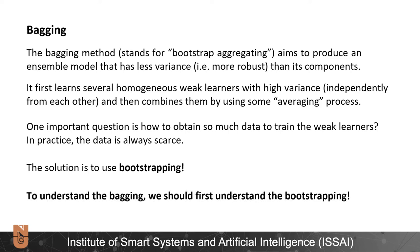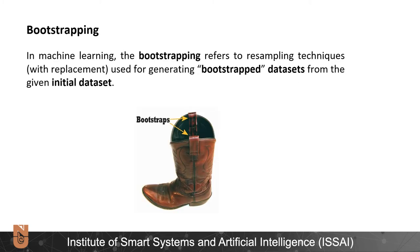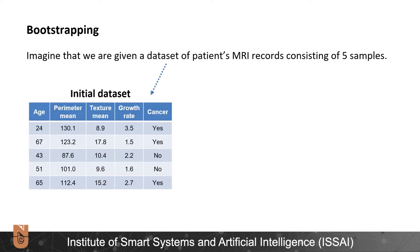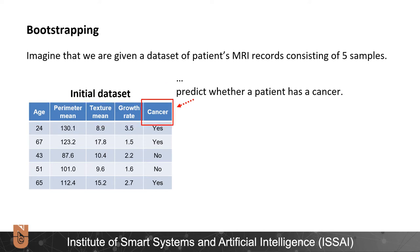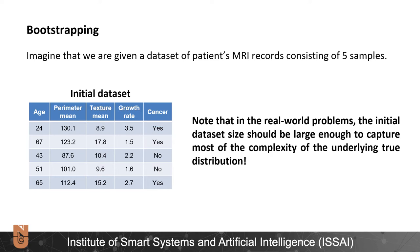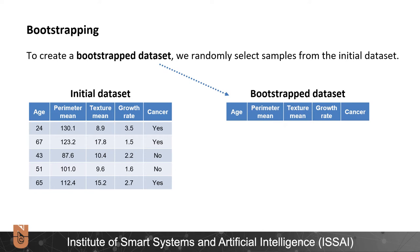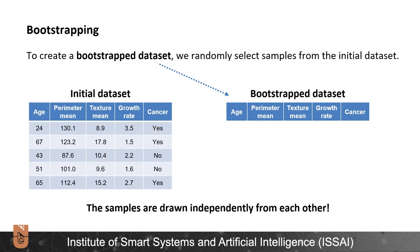To understand bagging, we should first understand bootstrapping. In machine learning, bootstrapping refers to resampling techniques used for generating bootstrap datasets from the given initial dataset. Imagine that we are given a dataset of patients' MRI records consisting of five samples, where the following variables will be used to predict whether a patient has cancer. To create a bootstrapped dataset, we randomly select samples from the initial dataset. The samples are drawn independently from each other.